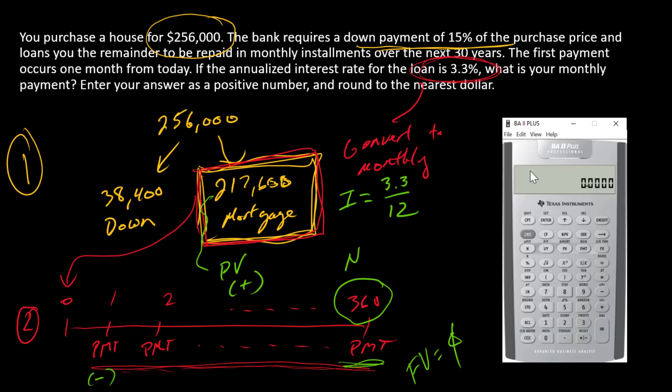Alright, so first off, let's enter the PV. So $217,600, there's my PV. There's 360 payments, so 360 goes into N.